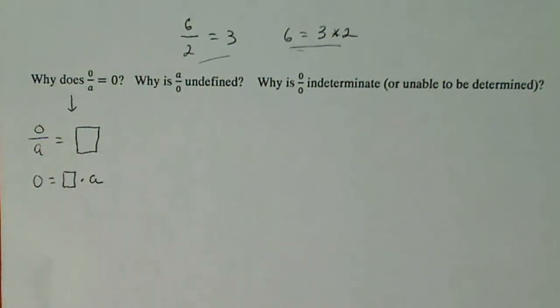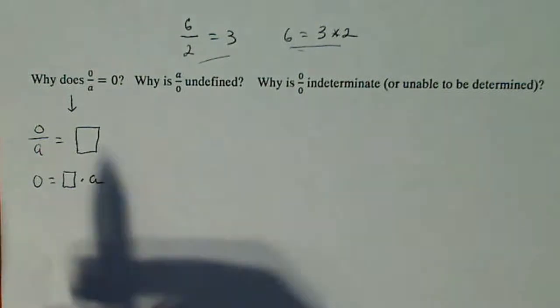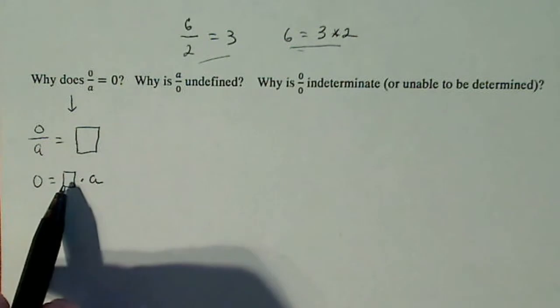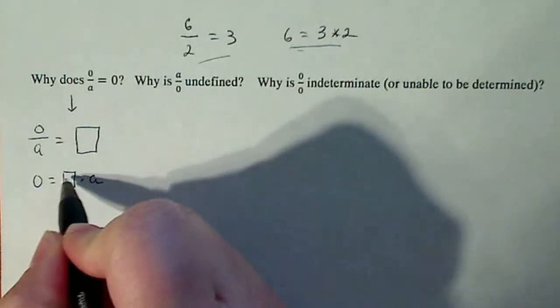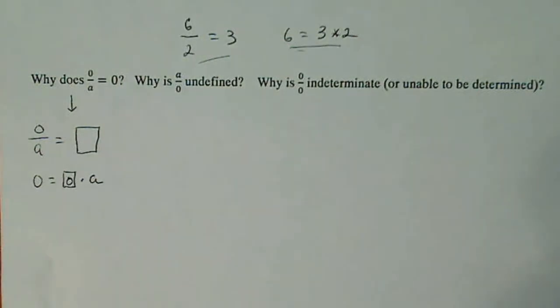And what is the only number that can possibly go in that box? Well, the only way that we can multiply a real number times a number and get 0 is if this number in here is also 0. So that means that that number goes in here, so 0 over A equals 0.